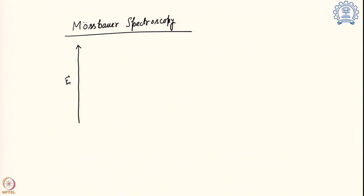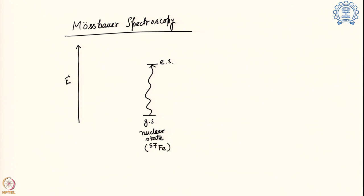How is it happening? Like any other spectroscopy, we are talking about a change from ground state to an excited state. Which particular system are we changing? We are changing the nuclear state of a system. Taking the 57-iron isotope as an example, it goes from a ground state of I = 1/2 to an excited state of I = 3/2. This energy is quite large because we are changing the nuclear state, requiring energy in the gamma ray region — specifically around 14.4 kilo-electron volts.